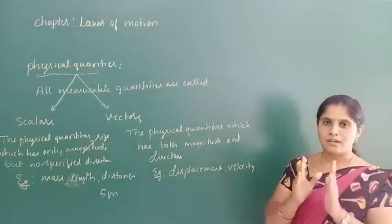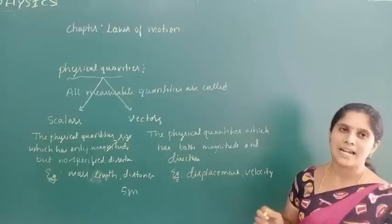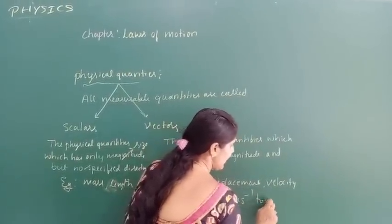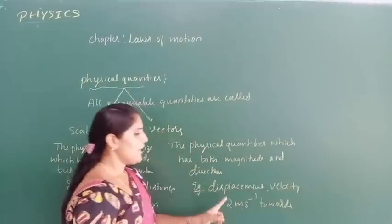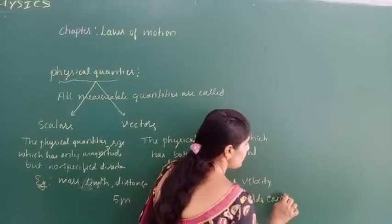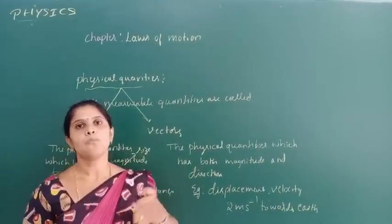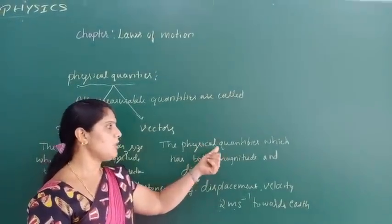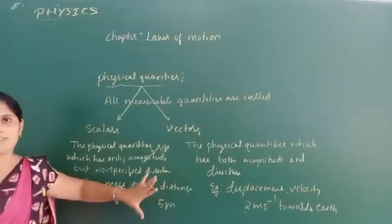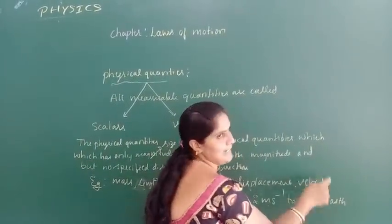For example, an object moves with a velocity of 2 m per second towards east. Here, 2 is the size — that is magnitude — and towards east or towards west indicates the specified direction, the direction in which the object moves. So it has both magnitude and direction — it is called a vector. Scalars have only magnitude but no direction; vectors have magnitude plus direction.